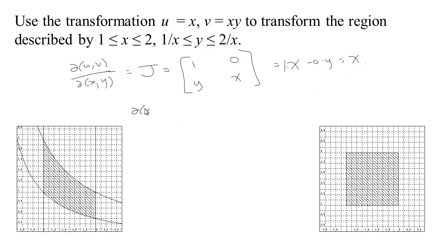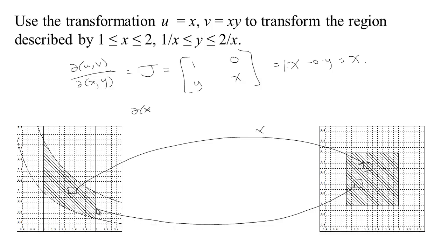So we have this stretching factor of x. That means tiny boxes going this direction get their area multiplied by a factor of x. Going back the other way, if you have a tiny area here, it gets transformed to roughly a parallelogram and gets smashed by a factor of 1 over x. Since the transformation says x equals u, the stretching factor is just 1 over u if you write it in those terms.